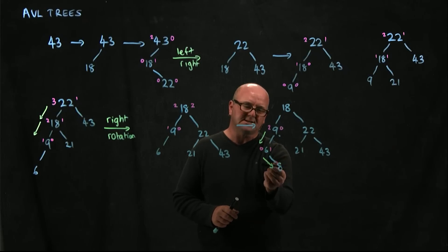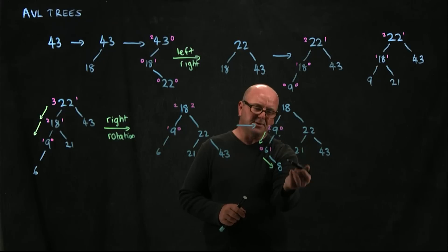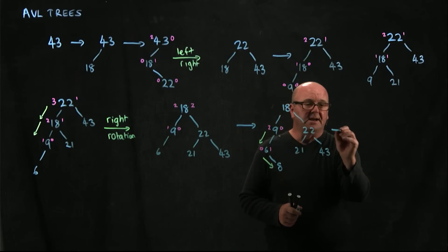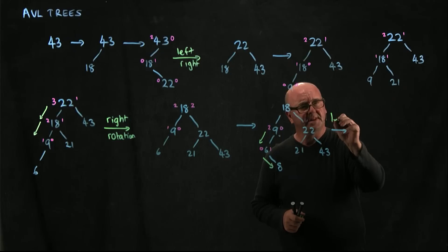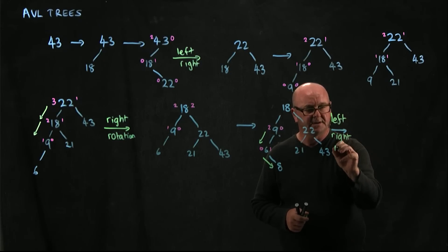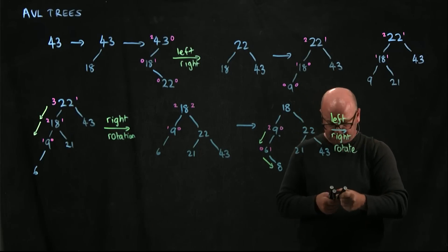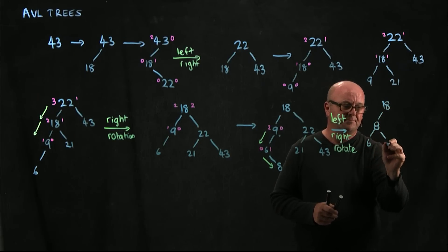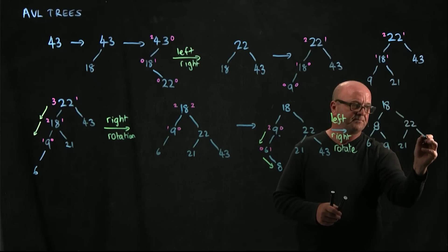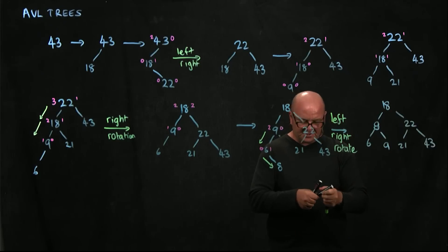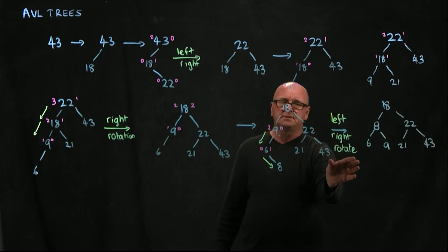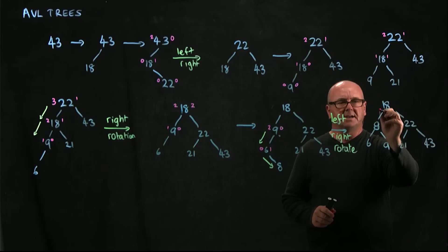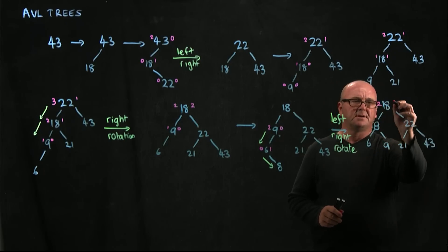The left-right rotation brings 6 to be the left child of 8, and 9 to be the right child of 8. We end up with a balanced tree again. Make sure you note what kind of rotation you have to do and that your tree is balanced. Our 18's longest path is 2 on the left and 2 on the right.